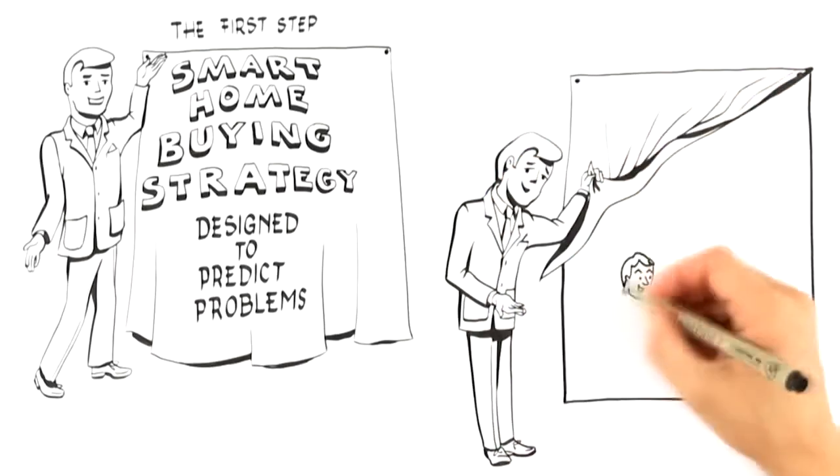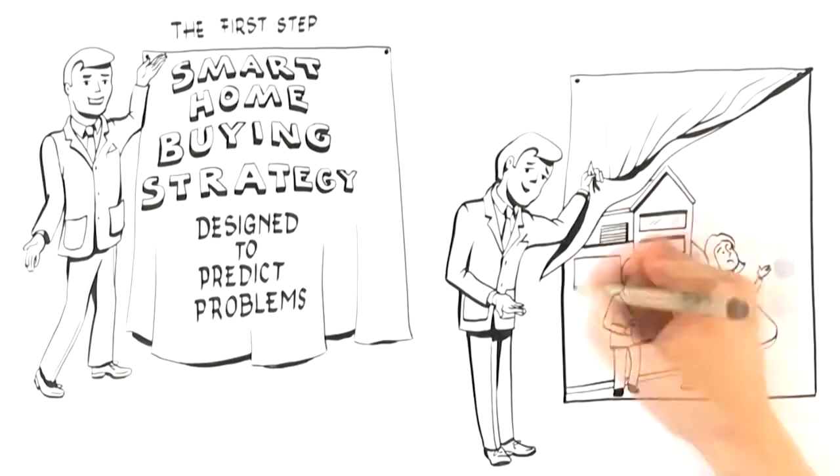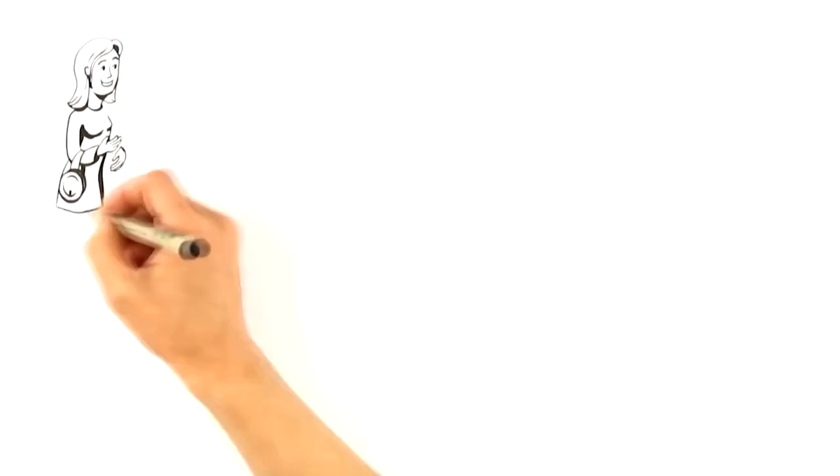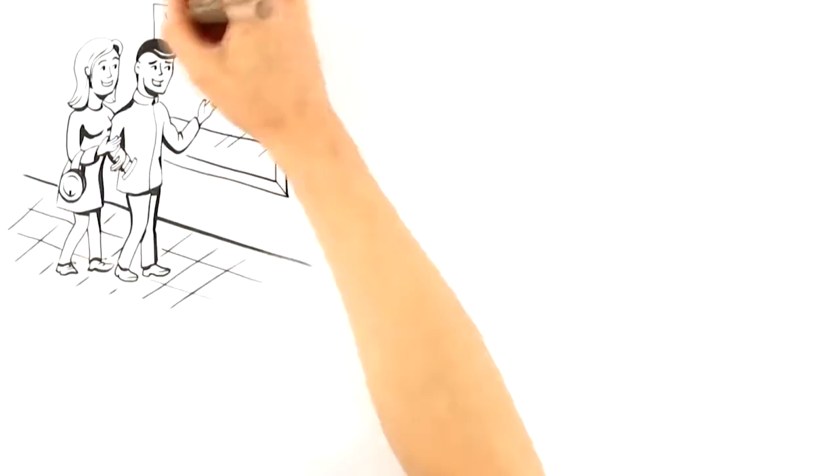They unknowingly put themselves at a significant disadvantage which prevents them from seeing all of their options and are at risk of overpaying for the home they choose. This mistake typically occurs when a buyer sees an attractive property online, from the street, or in an advertisement, and then calls or emails the agent for more information.